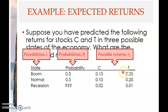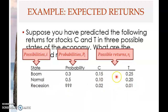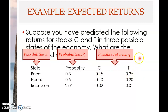For stock T: if there is a boom, stock T's return will be 25%; if there is normal growth, it will be 20%; and if there is a recession, stock T's return will be 1%. Stock T is higher than stock C in a boom or normal growth, but lower in a recession. The question is: how do you compute the expected return for stock C and stock T?